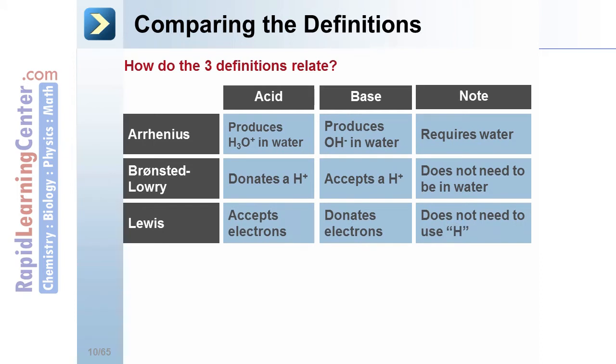Lewis acids and bases accept and donate electrons. This definition does not need the use of the hydrogen atom. Many Arrhenius acids and bases are also Bronsted-Lowry and Lewis acids.